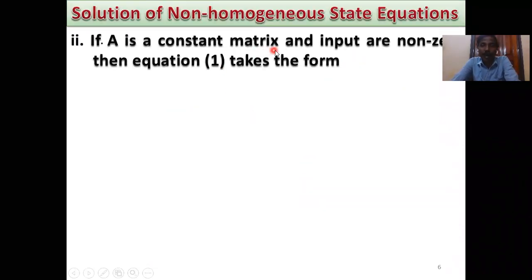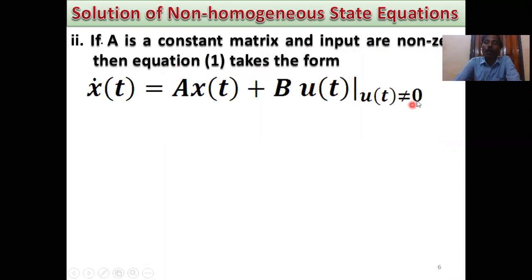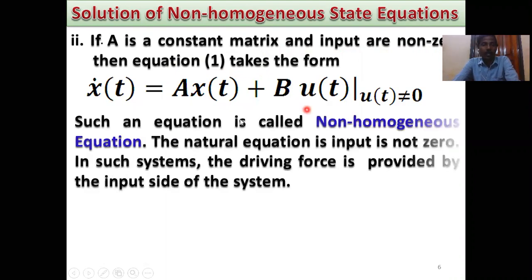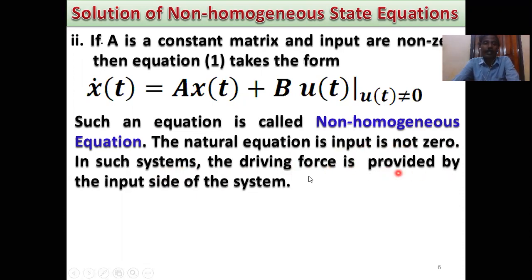If A is a constant matrix and the input is non-zero — U(t) ≠ 0 — then equation 1 takes the form Ẋ(t) = Ax(t) + Bu(t). Such an equation is called a non-homogeneous state equation. In this case, the driving force is provided by the input side of the system.